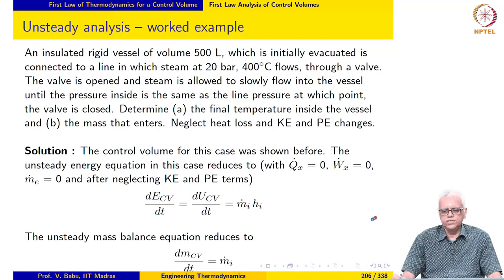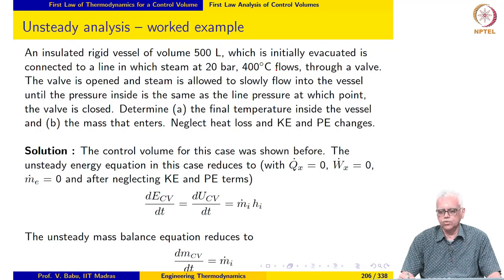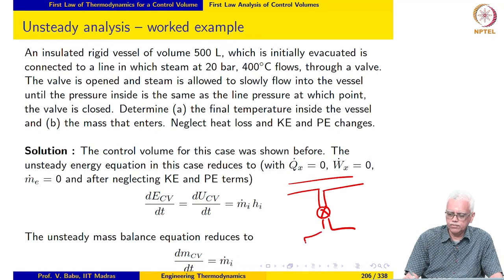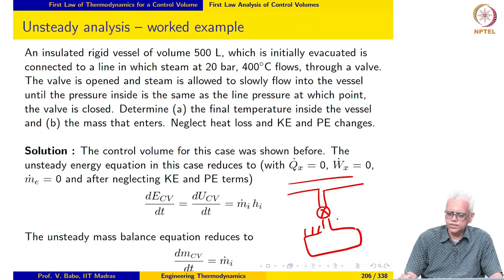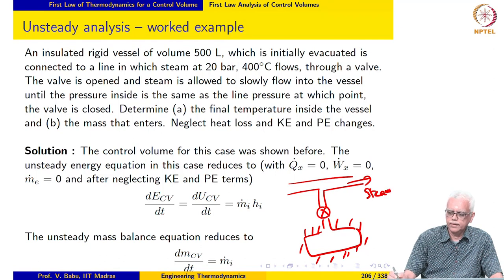An insulated rigid vessel of volume 500 liters, which is initially evacuated, is connected to a line in which steam at 20 bar, 400 degree Celsius flows through a valve. We have a line in which steam is flowing and we are connecting an initially evacuated, insulated rigid vessel. It is insulated. Steam is flowing in this line.